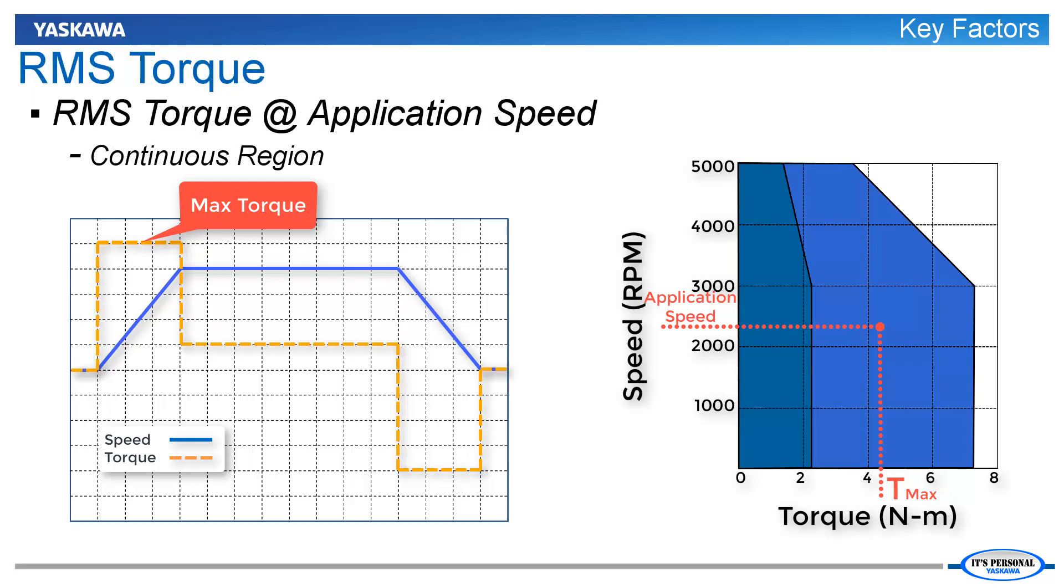Another torque calculation is critical for sizing, the RMS torque. RMS torque is a time-weighted average of the torque during a complete machine cycle and represents an equivalent steady-state torque level. For example, a servomotor with 1.2 Nm RMS torque will experience the same heat rise if it produces 1.2 Nm constant torque.